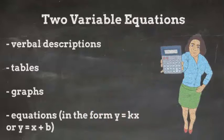Or we can represent it in a table, where the two unknowns are listed with multiple possible values. Or we can write it in an equation. The forms of the equations that we're going to focus on in 6th grade are the form y equals kx, or y equals x plus b.